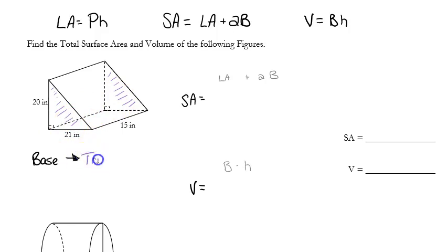So the base here is a triangle, which means I have to calculate the perimeter of a triangle, and the lateral area is going to be the height, which is the distance between my bases. That's this length here. That's how far apart my bases are. That's the height for both lateral area and volume.